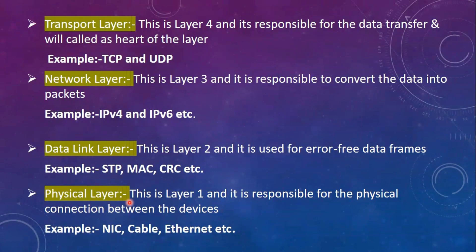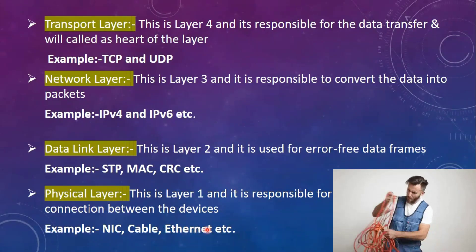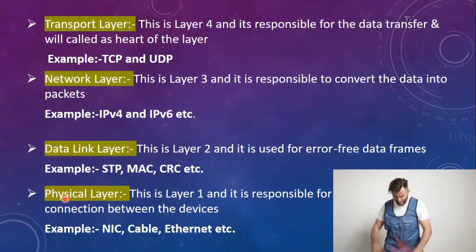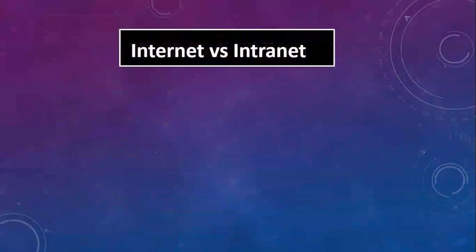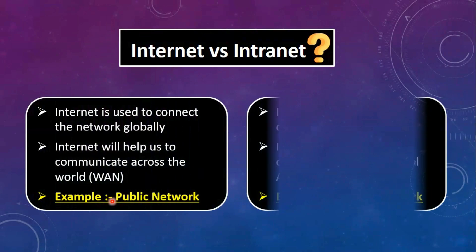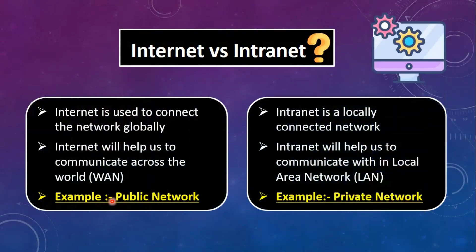Physical layer is the lowest layer — like NIC card, cable, ethernet, hub. Hub is a physical layer device. Now, we have internet, intranet, and extranet. This is very simple: the internet is a global connection, intranet is a local connection.